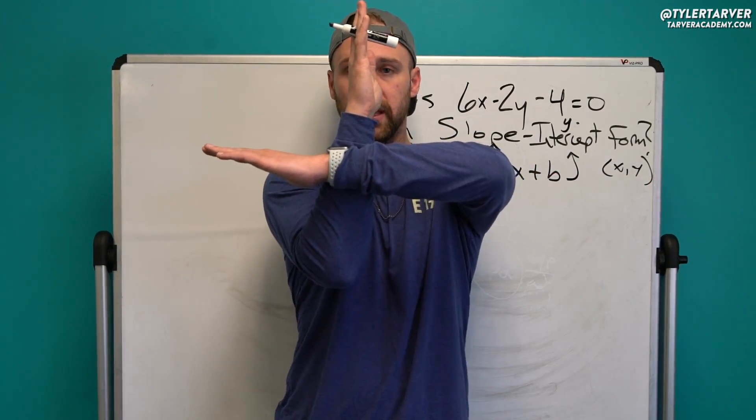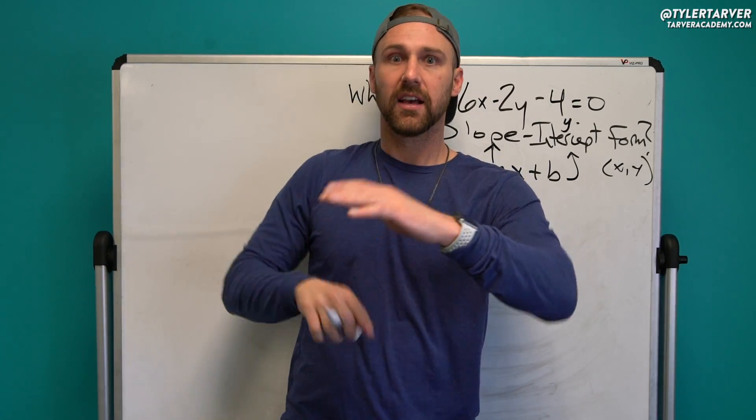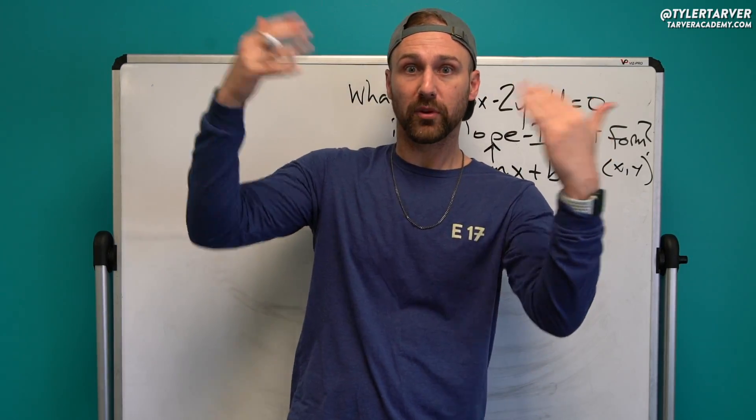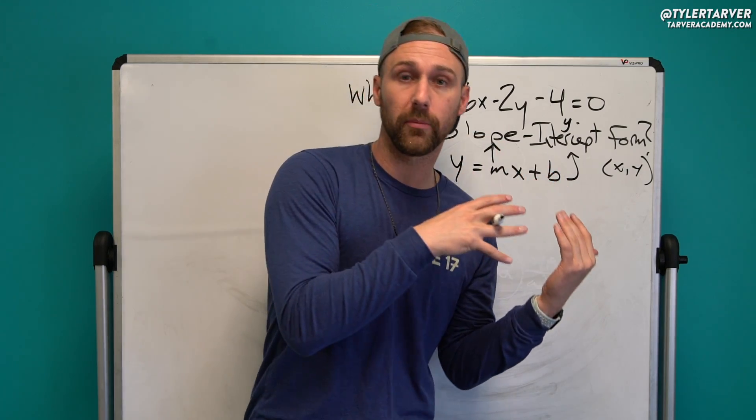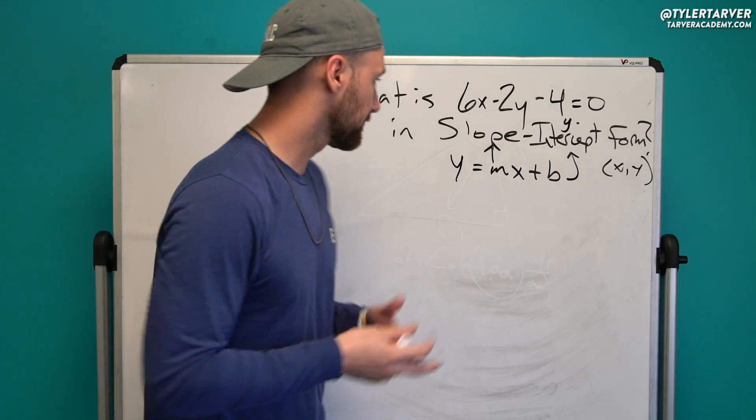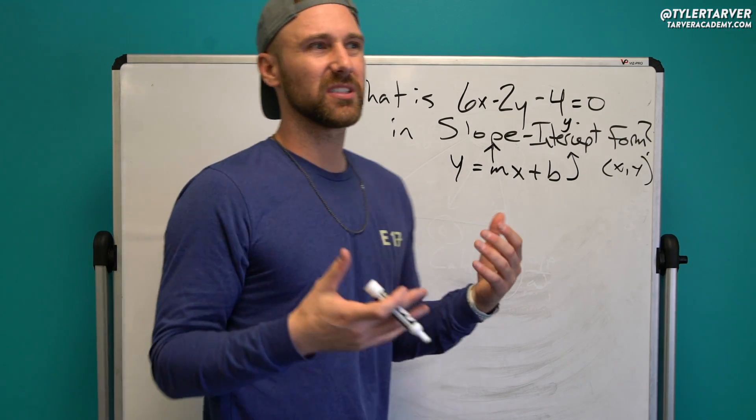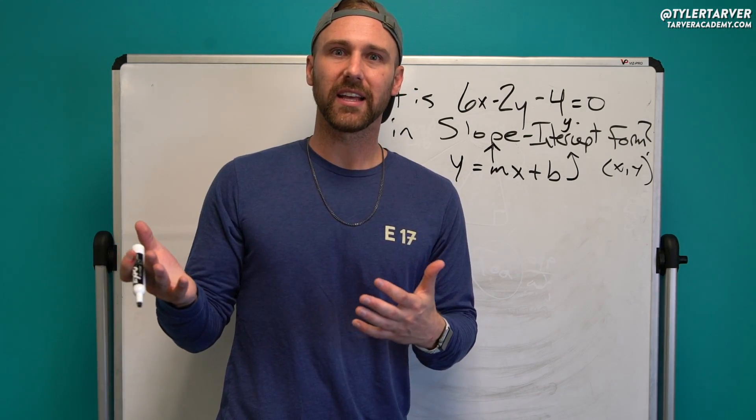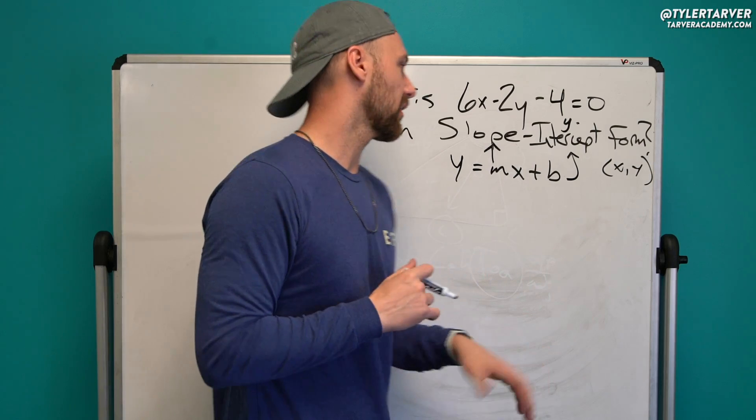So you've got your coordinate plane. Anywhere a line is, you can put it in slope-intercept form, and that represents that line. You could use the formula to plot the line or use the line to find the formula. So it's like a label for what the line is, a definition for it in mathematical terms.